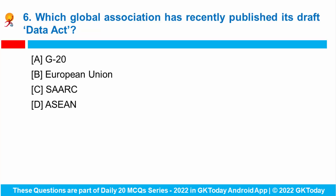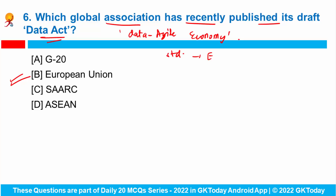Question number six: which global association has recently published its Draft Data Act? The European Commission published its Draft Data Act with new rules for data sharing, forming part of the European Union's strategy to make it a leader in the data-agile economy. The proposed legislation aims to make data sharing and data use easier and to set standards at an EU-wide level. It calls for manufacturers to allow owners of connected devices to see what data is being gathered.